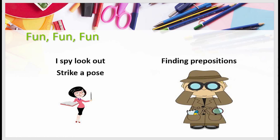Activity number six is 'Strike a Pose.' The teacher will strike a pose and have students make sentences. For example, students look at the teacher's pose and say: you are looking to the right, your hand is on top of your head, your left arm is behind your back, your left leg is on the chair. It would be a fun activity for students.